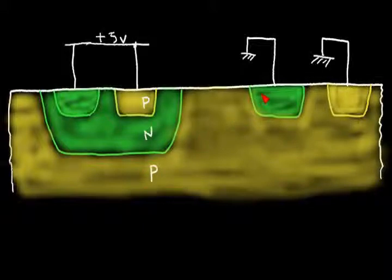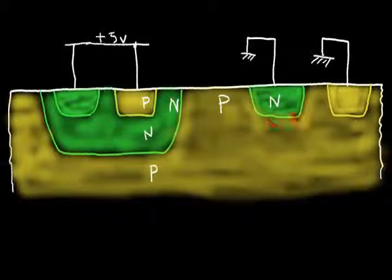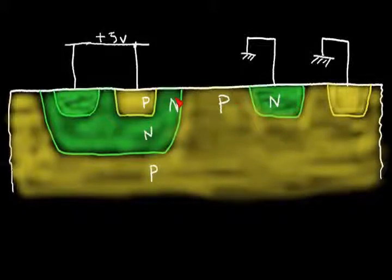Now if we look over here: I have an N-type silicon, a P-type silicon, and an N-type silicon. So over here I have an N-P-N bipolar transistor. So here I have a P-N-P bipolar transistor and an N-P-N bipolar transistor. So let's draw these bipolar transistors.